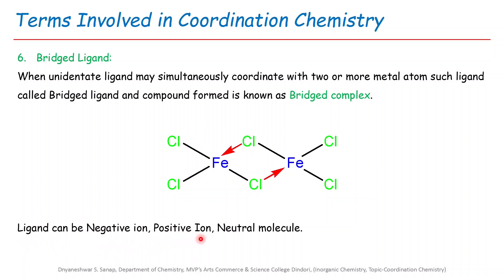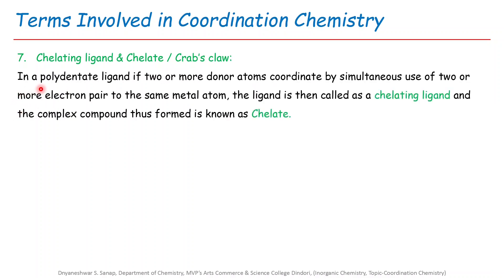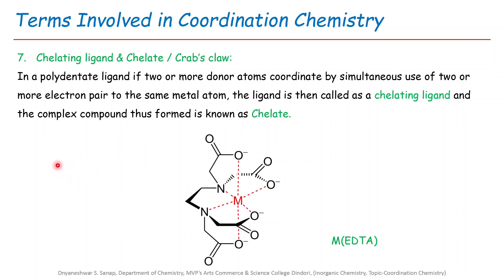The seventh important term is chelating ligands, also called chelates or crab's claw. When a polydentate ligand has two or more donor atoms that coordinate simultaneously using two or more electron pairs to the same metal atom, the ligand is called a chelating ligand and the complex formed is known as a chelate. An example is a metal with EDTA — ethylenediaminetetraacetic acid. Here the central metal atom is surrounded by six coordinate bonds formed by just one EDTA ligand, which has six donor sites.